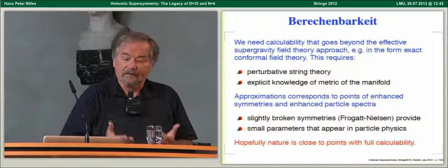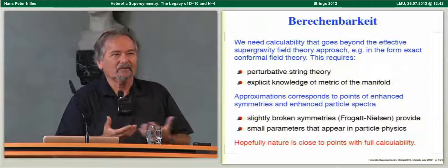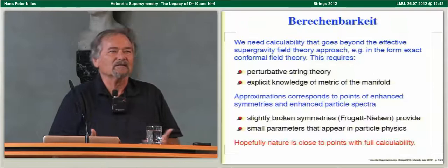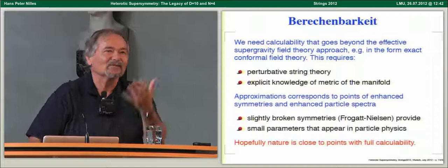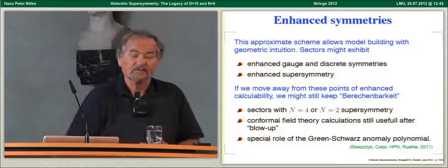These orbifolds sit at points in moduli space with enhanced symmetry. It might very well be that this enhanced symmetry is what we see in nature. After all, the electron mass is much lighter than the top quark mass, and many ways to understand that involve a slightly broken symmetry. So we might actually be at a point close to one of these places of enhanced symmetry. This also includes discrete symmetries and enhanced supersymmetry, as you will see later.